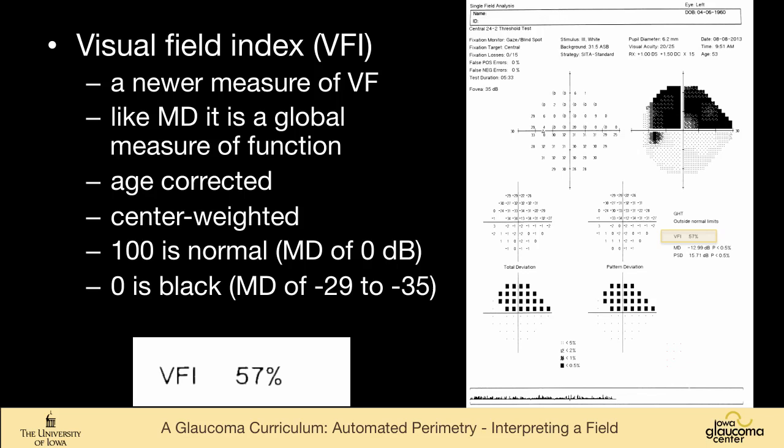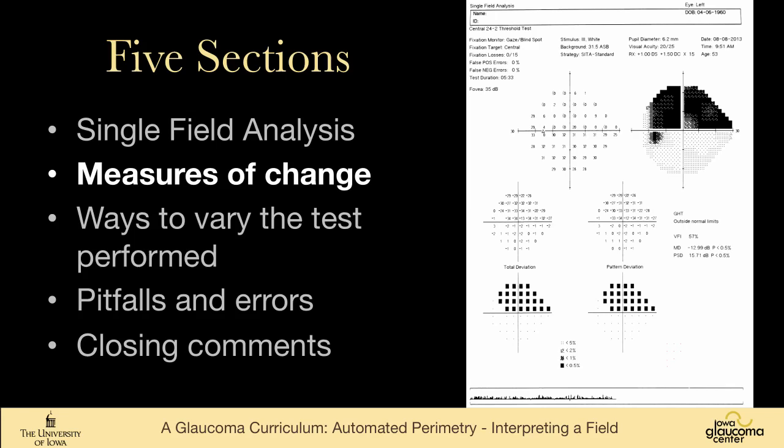It is a measure of global function. It's age corrected, center weighted, but the range is more expanded and more consistent. So it goes from 0 to 100, whereas the mean deviation goes from plus numbers down to minus 29 to 35, depending on the age of the patient. So it's a little bit more consistent as a measure. And I really don't have a tremendous amount of experience using it because it's fairly new and it's not on all of our perimeters.